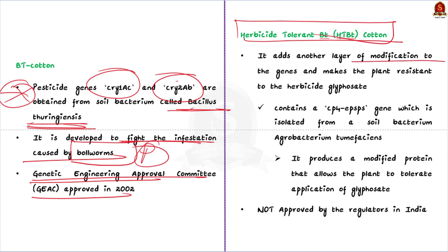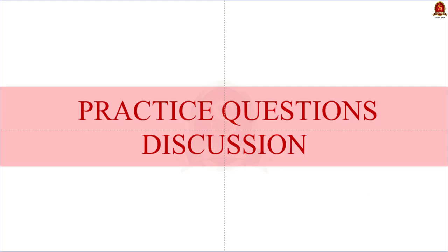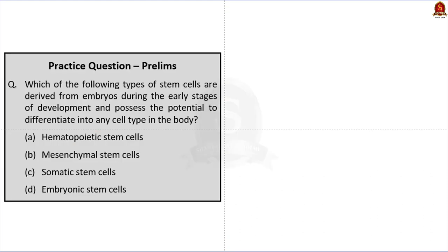Another type of GM crop is Herbicide Tolerant BT Cotton, or HTBT cotton. The HTBT cotton variety adds another layer of modification to the genes, making the plant resistant to the herbicide glyphosate. It contains the CP4 EPSPS gene, which is isolated from a soil bacterium called Agrobacterium tumefaciens. This bacterium produces a modified protein that allows the plant to tolerate glyphosate. However, this variety has not been approved by any regulatory authority in India.